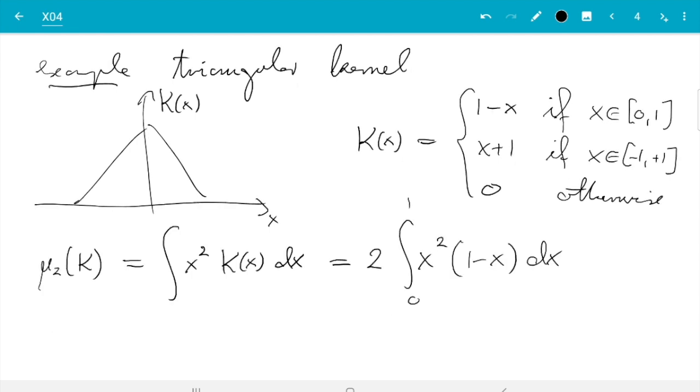Namely, that is 2 times integral x squared dx minus 2 times integral x to the 3 dx. And that is 2 times primitive of x squared is 1 third x to the 3. So the integral is 1 third. Primitive of x to the 3 is 1 quarter x to the 4. So minus 1 quarter. And that's 2 over 12 is 1 sixth. Good. So that was easy.